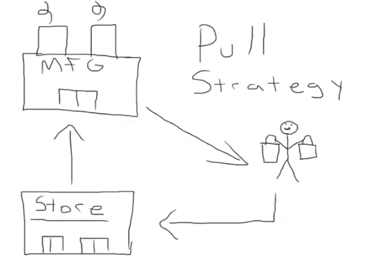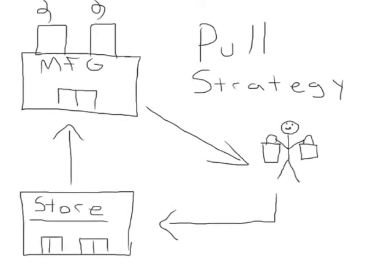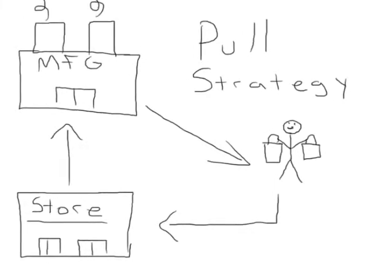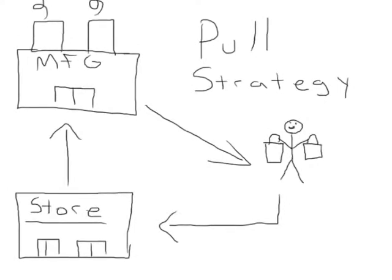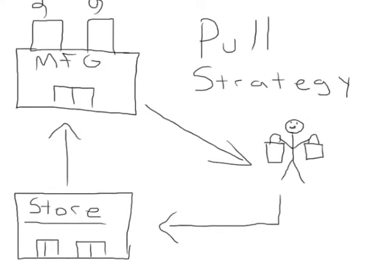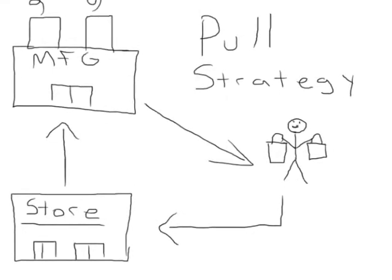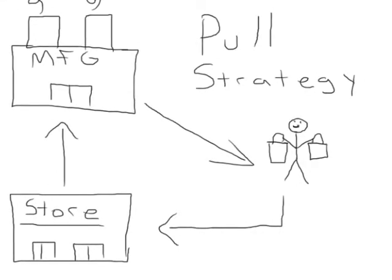When a business uses a pull strategy, they cut out the middleman and target the customers directly. Then the customers go to the retail stores to request the business's products. Using the same example, the computer manufacturer would produce and manage their own advertising campaign, enabling them to reach their target audience, and the customer would go to the electronics store and request and purchase the computer.